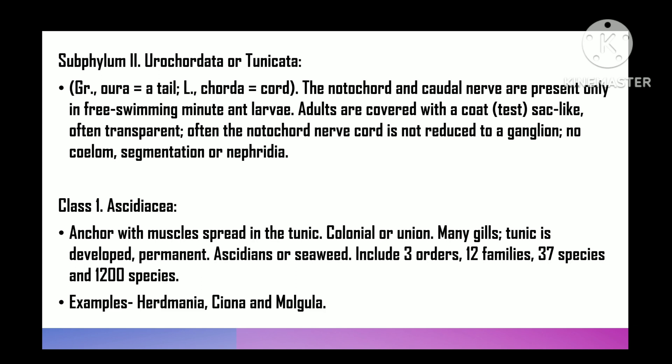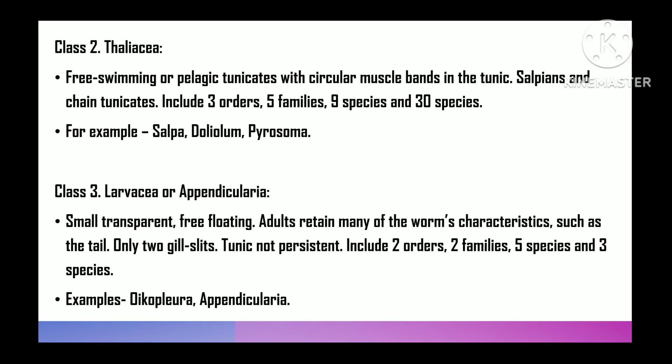For example, Herdmania. Class 2 is Thaliacea — free-swimming or pelagic tunicates with circular muscle bands in tunic, including salps and chain tunicates. Thaliacea includes three orders, five families, 9 genera, and 30 species. For example, Salpa, Doliolum, and Pyrosoma.